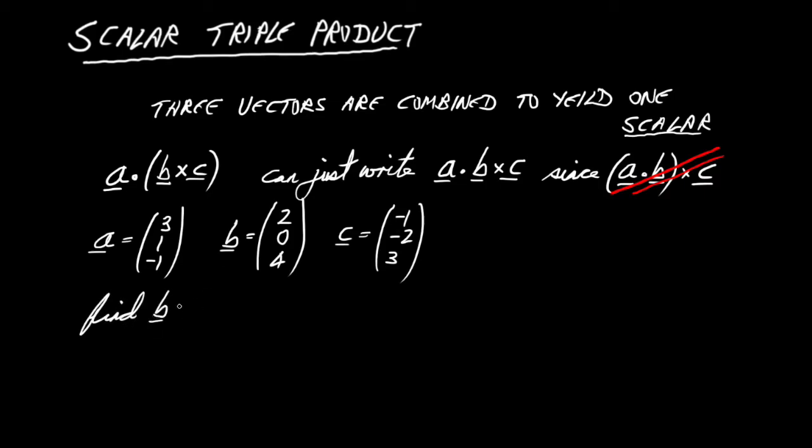So first we'll need to do the cross product, B cross C. So let's write that out. Remember, you can work out the cross product by whatever your favourite method is. I'm just going to do it in the method I introduced before, which is we ignore the first elements and we do the falling diagonal. Here's 0 and subtract the rising diagonal minus 8. That gives us the first element of 8.